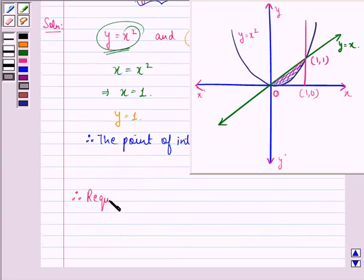Therefore, the required area is equal to the integral where the limit goes from 0 to 1, that is from this point 0 to this point 1 on the x-axis, of y such that y is equal to x.